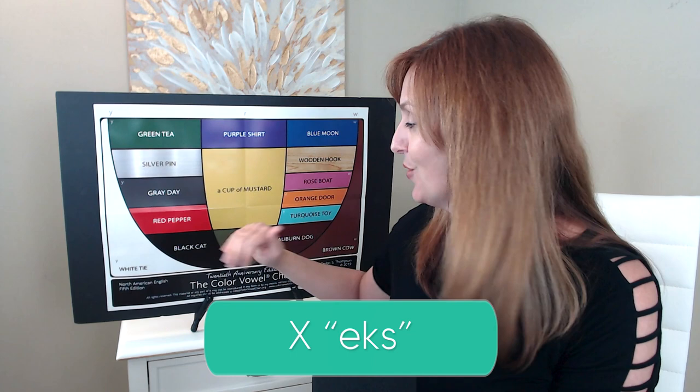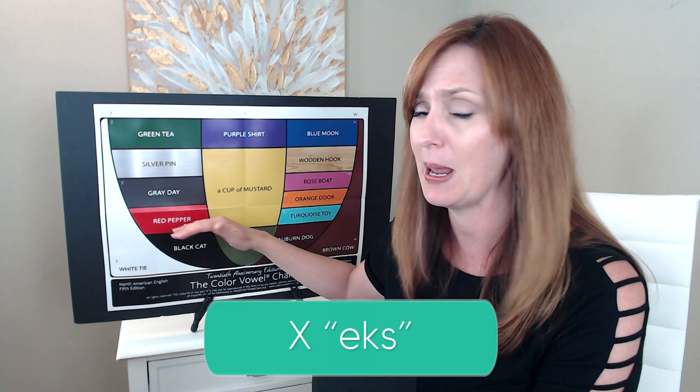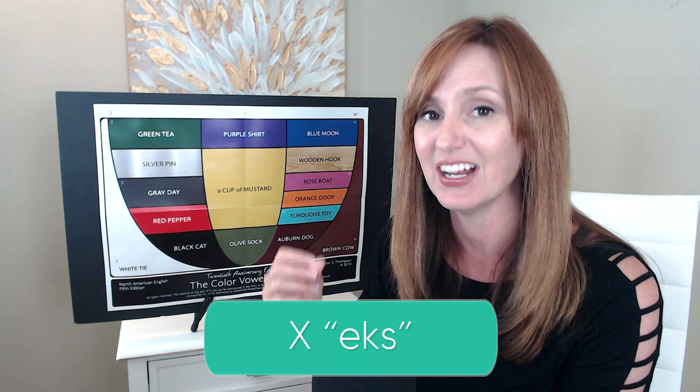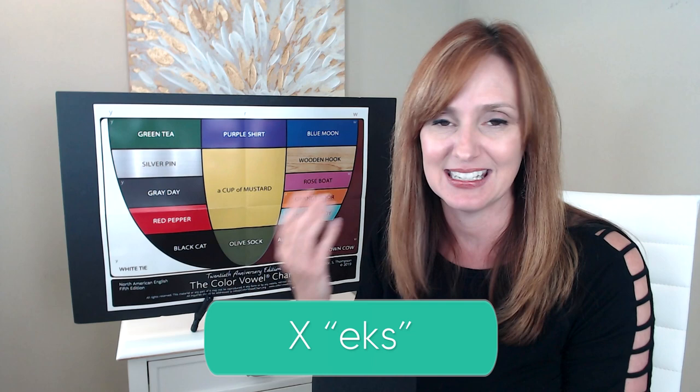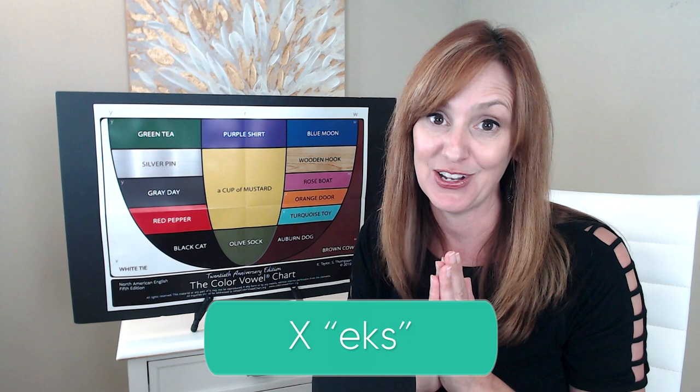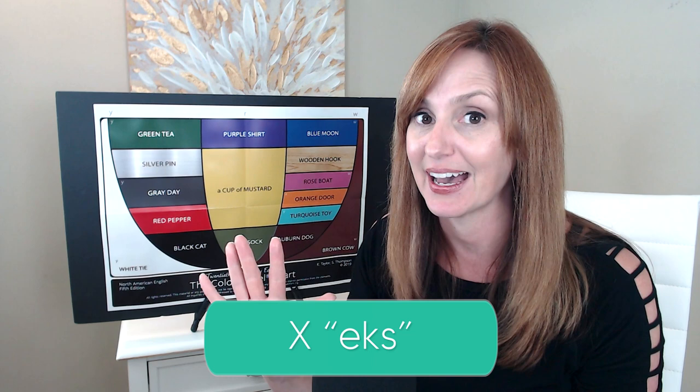X. Red pepper X. This is definitely a tricky one. We start with our red pepper vowel — eh — then we have a cluster: the K and S consonant together. X. This is frequently how the letter X itself is pronounced — that X sound — it's a cluster, two sounds together. If you have trouble pronouncing the letter X, I have another lesson for you that you'll definitely want to check out, and you can get there by clicking here. X.